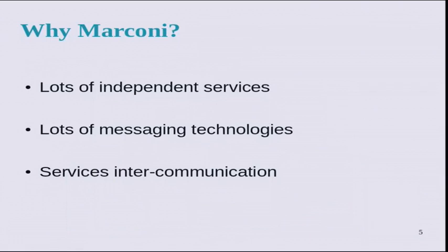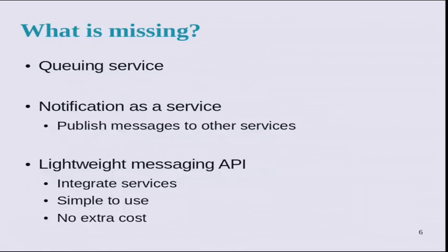We have a lot of independent services in OpenStack and a lot of messaging technologies, which means different languages. We want to have one unified way for the services to talk to one another. We have a missing piece in OpenStack. We want a queuing service, a notification as a service — meaning a service able to publish messages to other services — and a really lightweight messaging API that will allow us to integrate services using one unified API, simple to use and with no extra cost to your infrastructure.